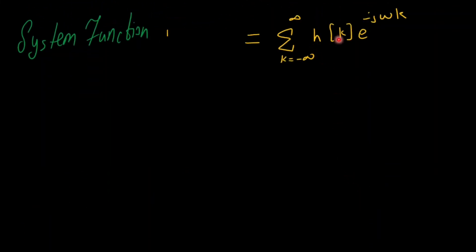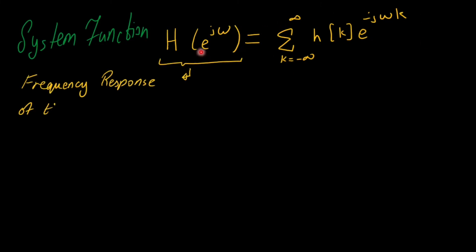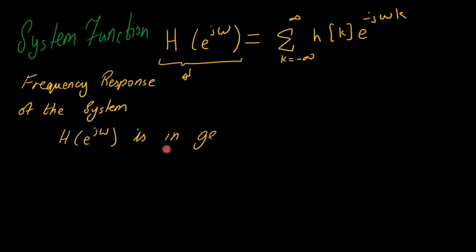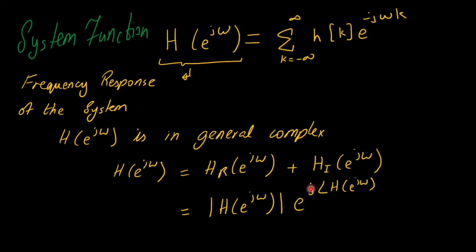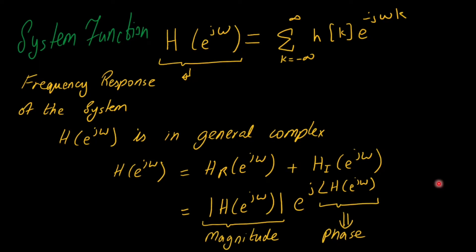We rewrite the system function as the summation from minus infinity to infinity of h of k times e to the power minus j omega k, which is the frequency response of the system, also called the transfer function or system function. This frequency response is in general complex, expressible in rectangular form as real plus imaginary parts, or in polar form as magnitude times exponential of j times phase.